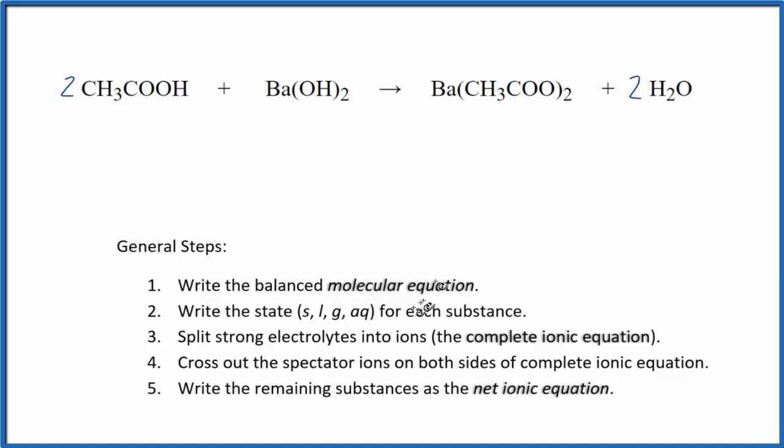Once we've done that, we write the states. Acetic acid, that's a weak acid. It won't break apart in water, but it will dissolve. So if you put it in water, it'll be aqueous because it dissolves, but it doesn't split apart into its ions just a little bit. So we don't consider this a strong electrolyte. Barium hydroxide, though, that's a strong base, a strong electrolyte. That'll split apart completely into its ions.